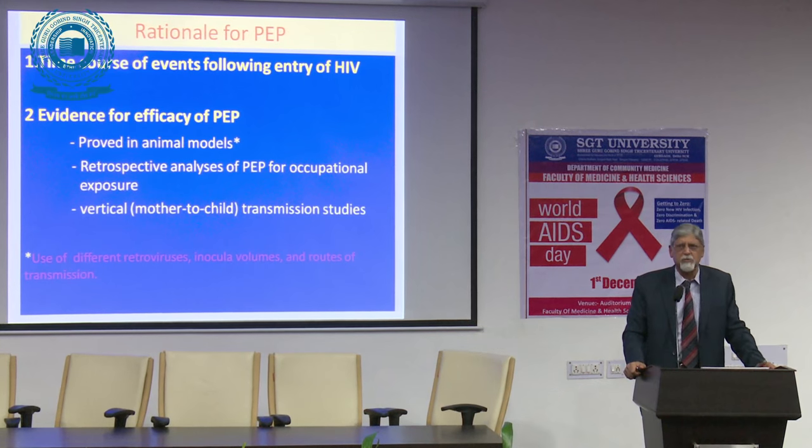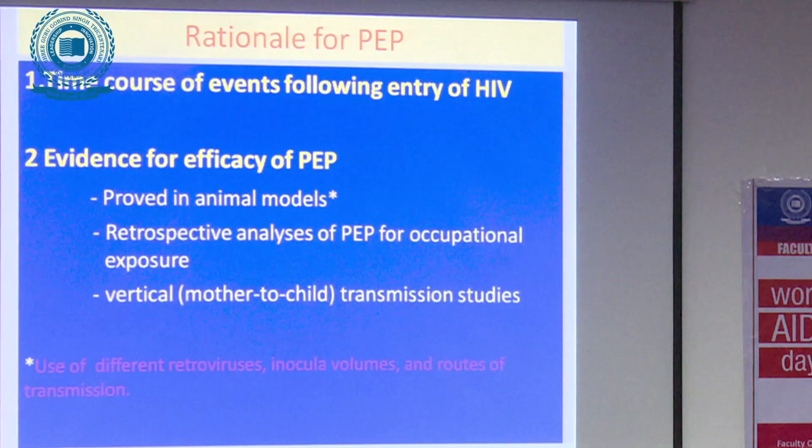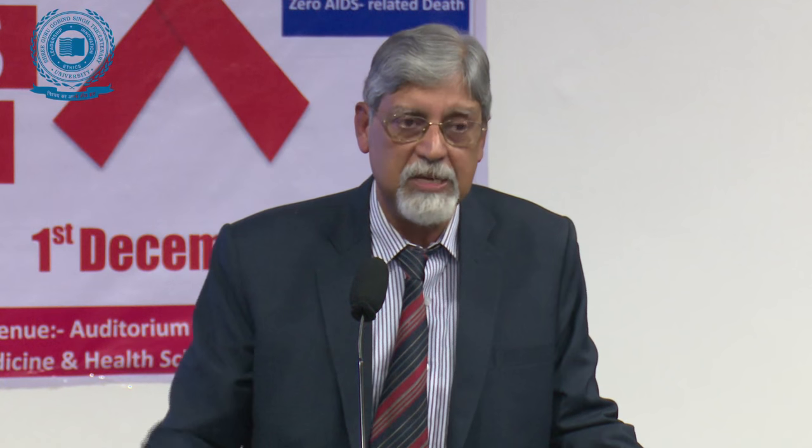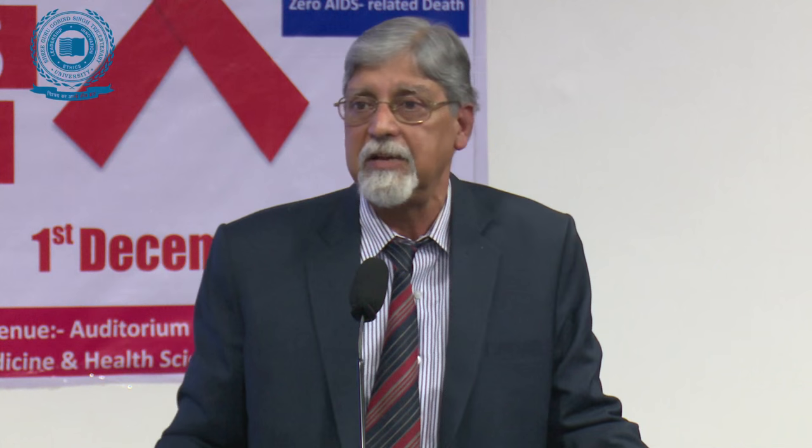Why has post-exposure prophylaxis been so effective? Cases had a grinding halt beyond 1996. Out of 58 total cases, hardly one or two occurred beyond when PEP was introduced. Animal studies have also proved PEP is successful in preventing transmission. The thousands of exposures with only 58 cases — and almost none beyond 1996 when PEP was introduced — is compelling evidence.